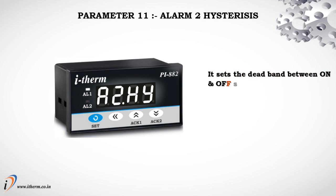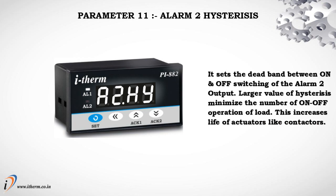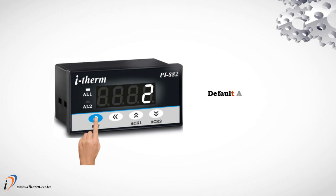Parameter 11: Alarm 2 Hysteresis. This sets the dead band between on and off switching of the alarm 2 output. A larger hysteresis value minimizes the number of on-off operations of the load, increasing the life of actuators like contactors. Default alarm 2 hysteresis value is 2.